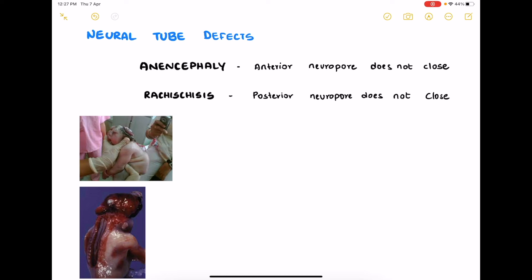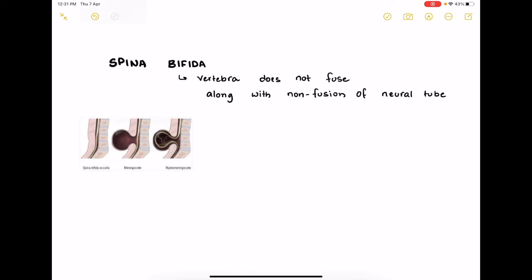Rachischisis is when the posterior neuropore does not close or the entire length of the neural tube does not close. The second image here shows that the entire neural tube is exposed or it is open to the dorsum of this fetus. The last thing to be discussed in this video is spina bifida where along with the non-fusion of the neural tube there is also non-fusion of the vertebra. Because of the non-fusion of the vertebra you have a bifid vertebra and that is why it is called spina bifida.